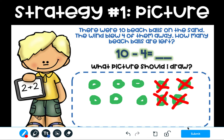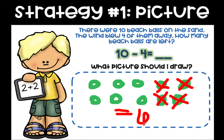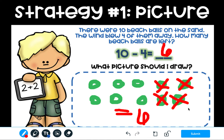Now that I've drawn 10 and I took away 4, how many are left? If you said there are 1, 2, 3, 4, 5, 6 left, you are correct. And you should get 6 as your answer. Great job.